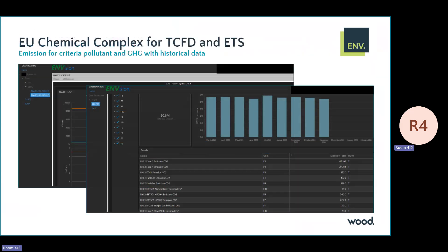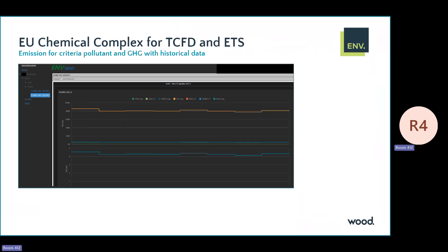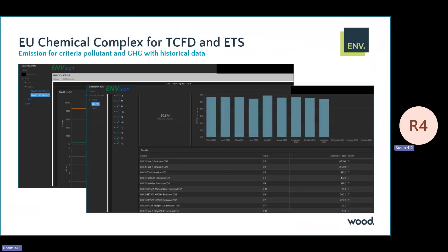This is the EU site I was talking about. They use this to capture both criteria pollutants and GHG with historical data. It shows CO2 flow, NOx, all combined with a history trend. You can do month-to-month or year-to-year views and sort by unit.